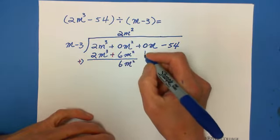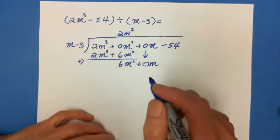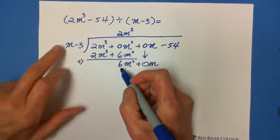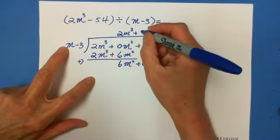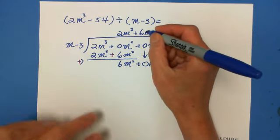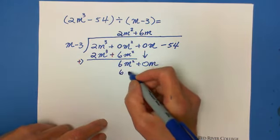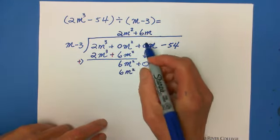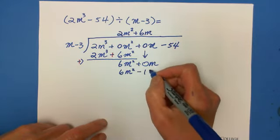And carry down 0 times m. Then we're matching 6 and this is 1. So it's 6. Positive is plus 6. And also m. Because 6m times m equals 6m squared. And 6m multiplied by negative 3 is negative 18m. And subtract.